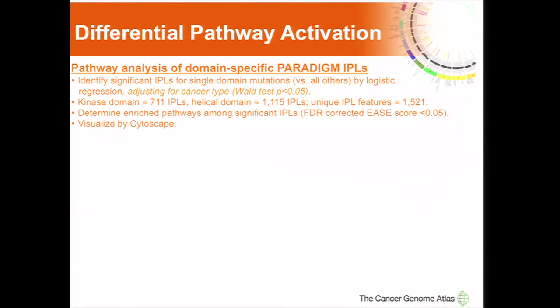To look at pathway activation while controlling for cancer type, we used the IPLs and identified significant IPLs for each domain versus all others by logistic regression, adjusting for cancer type with the Wald test at P less than 0.05. The kinase domain ended up having 711 significantly different IPLs, and the helical domain over 1,000. Amazingly, these did not overlap much — there were actually 1,500 non-overlapping IPL features between the two domains. We then determined pathway enrichment among the different IPLs with an FDR-corrected E-score and visualized by Cytoscape.